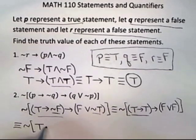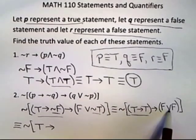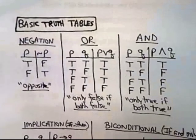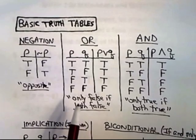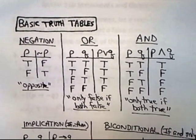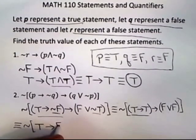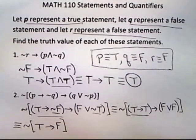Then I've got my implication. Now I'm back to an OR. Remember for an OR, the truth values for an OR, it's only FALSE if they're both FALSE. Well, they are both FALSE, so that would be FALSE. Okay.